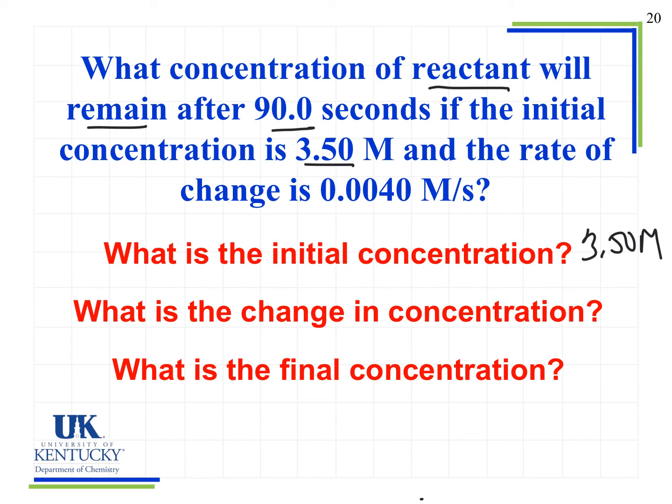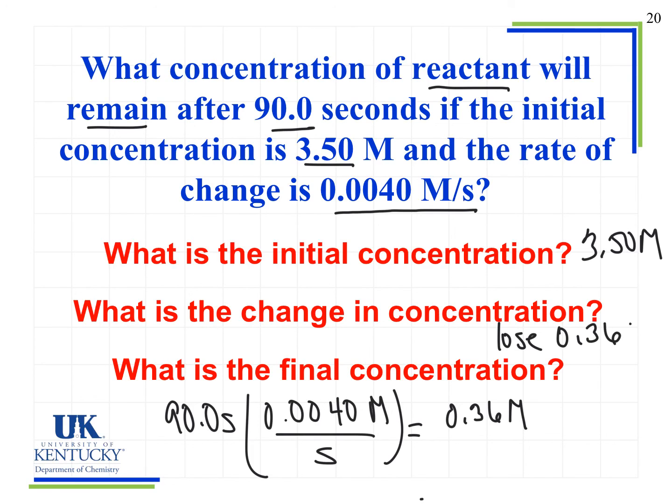So what we can look at is I say, okay, I know the rate of change is 0.0040 molar per second. And I know that 90 seconds have passed. So 90 seconds. And I'm going to multiply this because that molar per second gives me a relationship between time and concentration. So 90 times 0.004 is going to give me 0.36 molar. And so that's the amount that is lost. So we're losing the 0.36 molar.